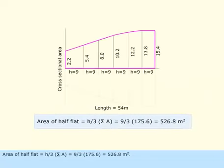Area of half-flat equals h by 3 multiplied by sigma A equals 9 by 3 multiplied by 175.6 equals 526.8 meters squared.